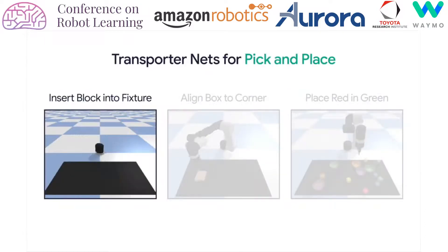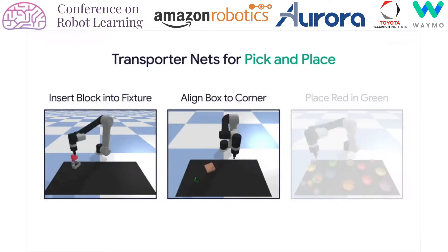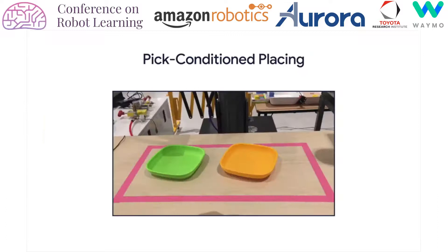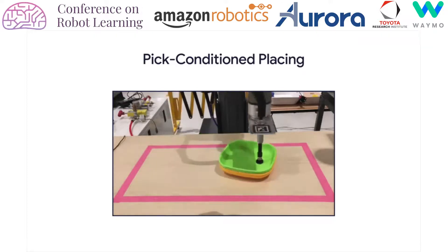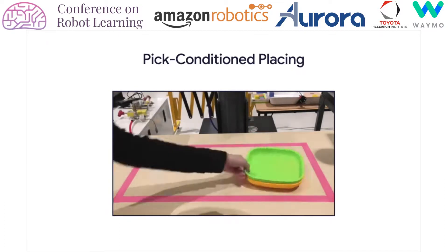For example, simple behavior cloning enables it to learn tasks such as inserting a block into a fixture, multimodal tasks like aligning any corner of an arbitrary box to a corner marked on the tabletop, or tasks that rely on visual cues such as putting red blocks into green bowls. The transporter operation provides a natural way to learn pick and place with very little data. Learning placing with scalar value actions would require sampling both good and bad initial picks to achieve well-behaved policies; the desired overlays look similar regardless of the initial pick, making transporter nets highly data efficient while still being able to generalize. The model shown here was only trained from 10 human demonstrations.